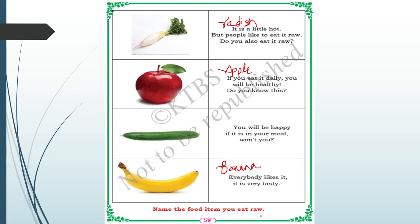Name the food items you eat raw, meaning uncooked. Those are like cucumber, radish, banana, and you eat all fruits raw — orange, mango. So we eat some food items in their raw state.